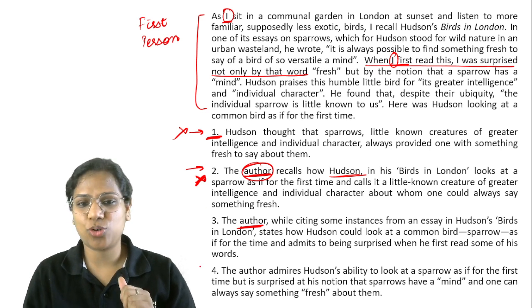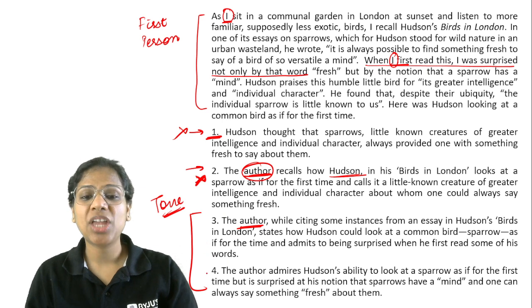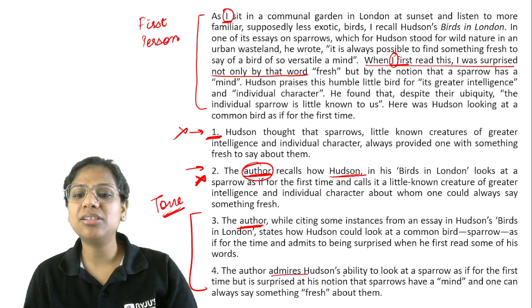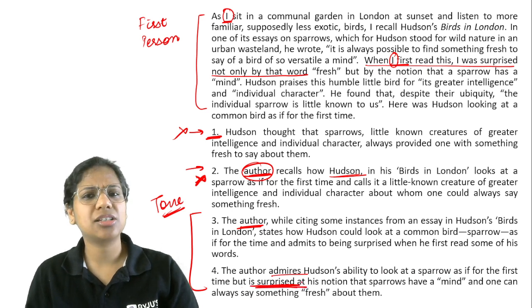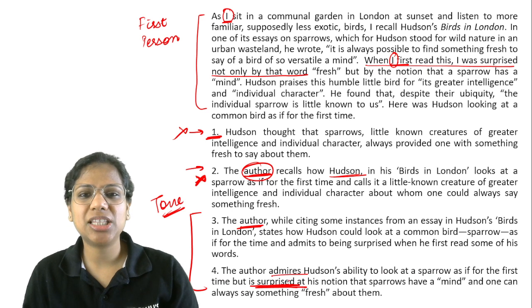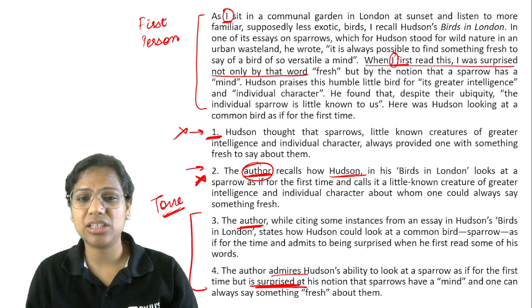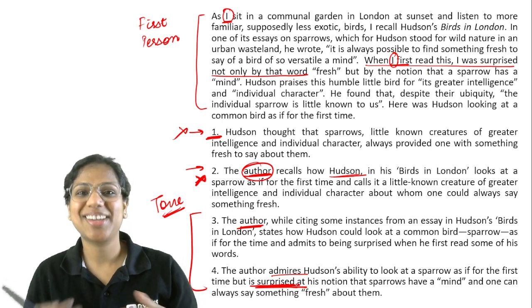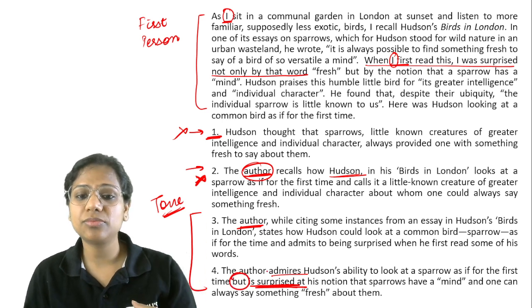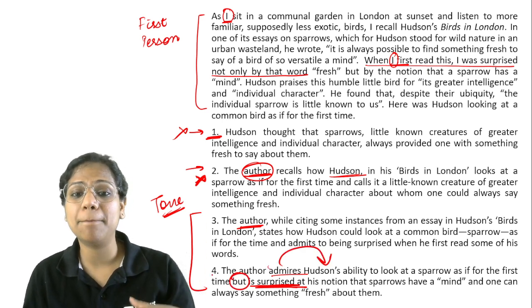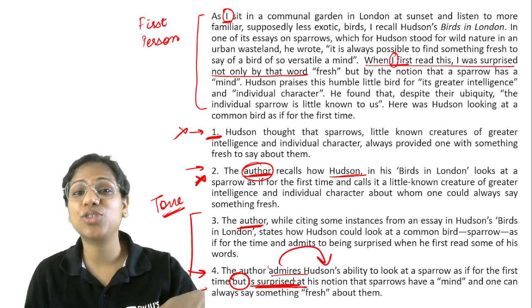Now between options three and four — this is a matter of tone. If you look at option four: the author admires Hudson's ability to look at a sparrow as if for the first time, but is surprised. When I use 'is surprised' in this way, it marks a sort of dislike. I am surprised that you think this — that sort of tone comes out. The author admires something but is surprised, so that means the author does not admire this thing. That is what comes out of Option 4.